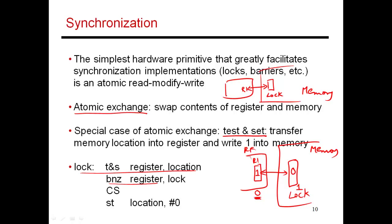The next thing I do is check the value of this register. If it is 0, that means no one was holding the lock — I just wrote a 1 to occupy the lock myself, and now I can carry on and execute my critical section. When I'm done, it's very easy to release the lock: all I have to do is store a 0 into that location. The 1 becomes 0, and now others who are trying to do a test-and-set can succeed.